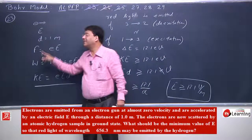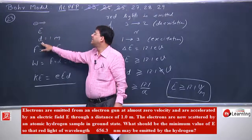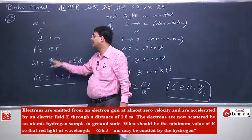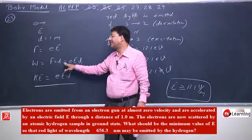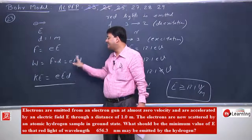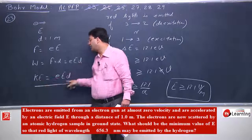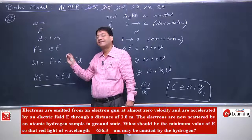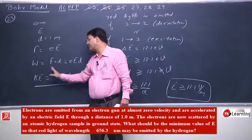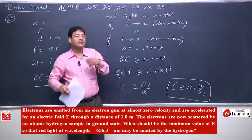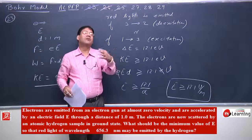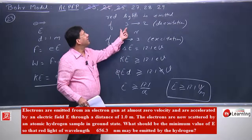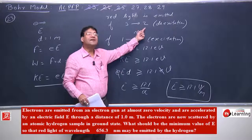Now let us understand this. We have an electric field, distance d, and force in the electric field is Q into electric field. Work done is force into distance, and whatever work is done, that is the kinetic energy gained. So kinetic energy of the electron is eEd. The accelerated electron then hits the hydrogen atom, and red light should be released from that hydrogen atom. Red light will be released when the hydrogen atom undergoes 3→2 de-excitation.